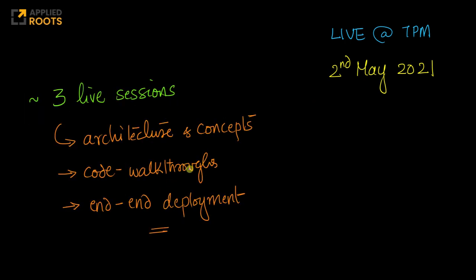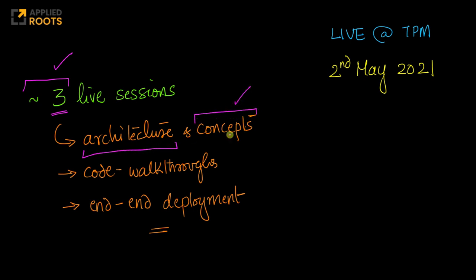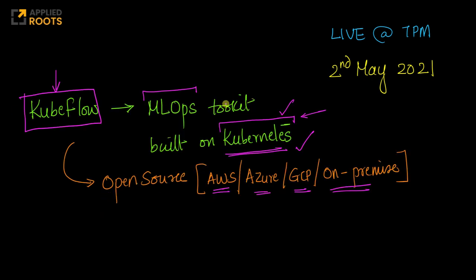To be realistic, the whole understanding of Kubeflow cannot happen in one live session. We will most likely require about three live sessions, maybe even four. We'll see as we make progress. In these live sessions, first we will understand the architecture of Kubeflow and various concepts like Kubernetes. Then we will have a bunch of code walkthroughs so that you can understand how an end-to-end system is built using Kubeflow. Kubeflow is called a machine learning toolkit because it reuses popular existing technologies like Kubernetes and Docker rather than reinventing the wheel by designing everything from scratch.